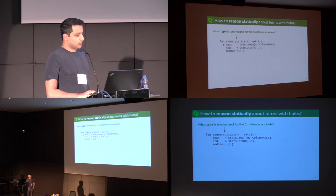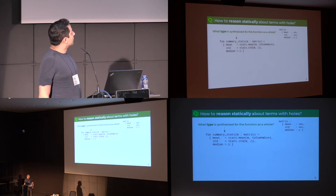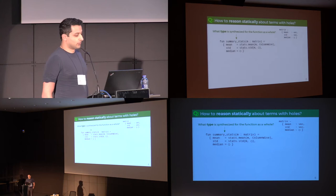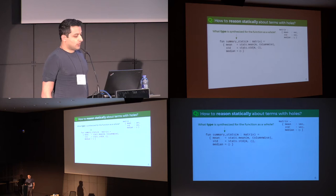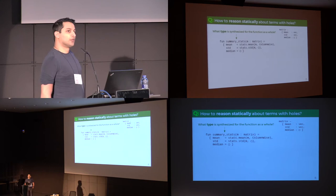The first contribution of this paper is a static semantics — a type system — for expressions with holes. This function gets an arrow type: takes a matrix, returns a record. For mean and standard deviation, there's enough information even with holes to know those fields will be vectors. For the median computation, there's just a hole with no annotation, so we handle that with holes in types as well. The whole expression is assigned a hole type.